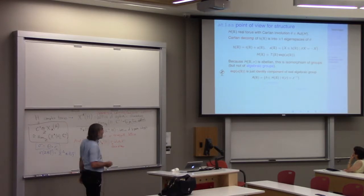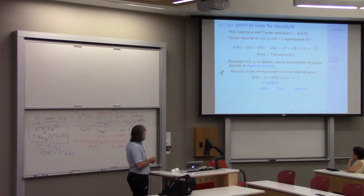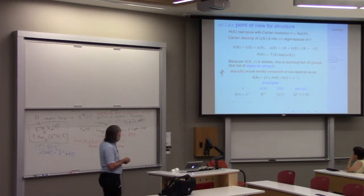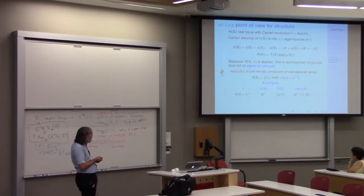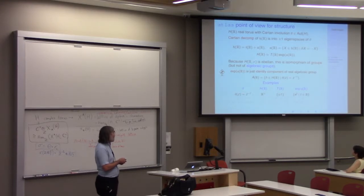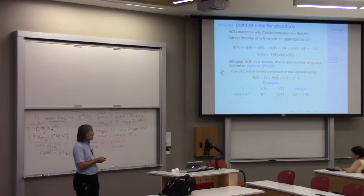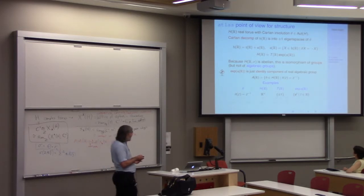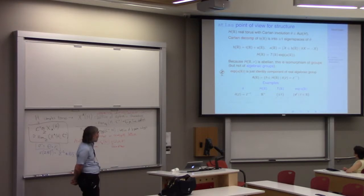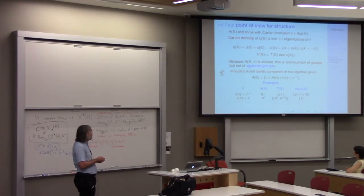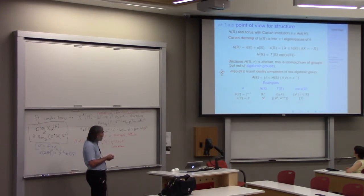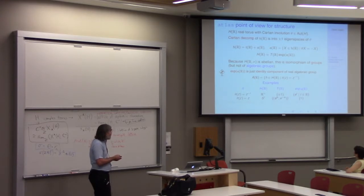Here are some examples. If my complex group is ℂ× with Cartan involution acting by inverse, then the group of real points is ℝ×, the maximal compact subgroup is {±1}, and X(𝔞(ℝ)) is the positive real numbers. If again the complex group is ℂ× but theta is the identity — that's the compact case — the real form is S¹, which is the maximal compact subgroup.